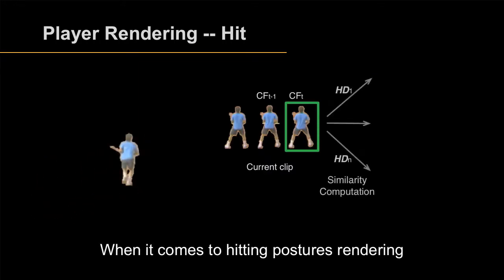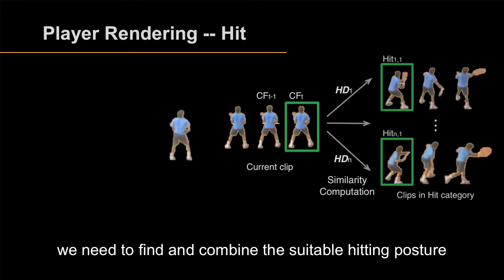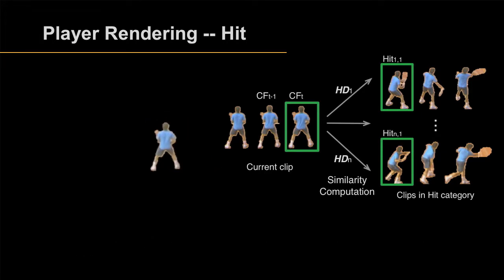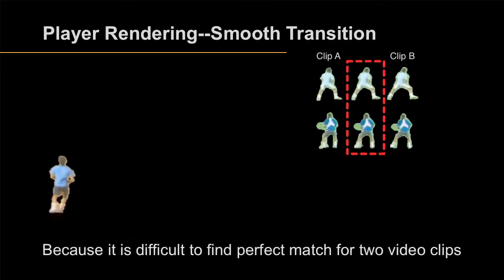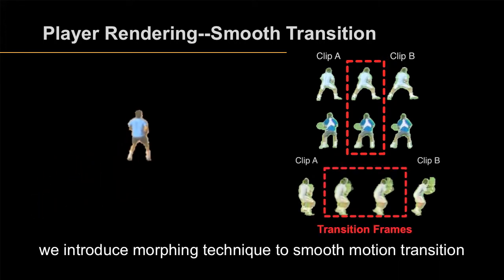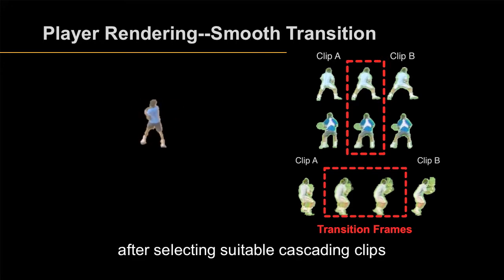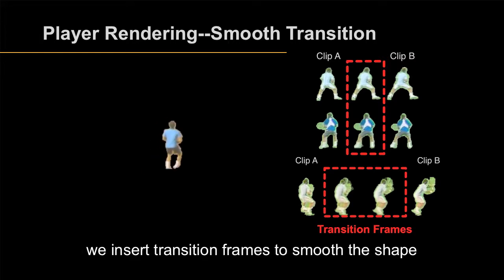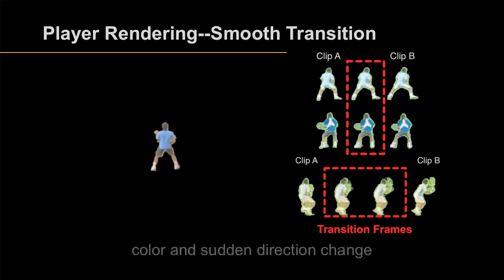When it comes to hitting posture rendering, we need to find and combine the suitable hitting posture which has similar shape and texture with the current clip. Because it is difficult to find a perfect match for two video clips, we introduce a morphing technique to smooth motion transition after selecting suitable cascading clips. Considering shape, color, and moving direction, we insert transition frames to smooth the shape, color, and sudden direction change.